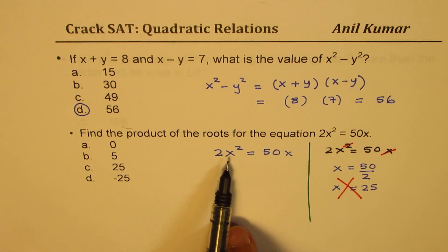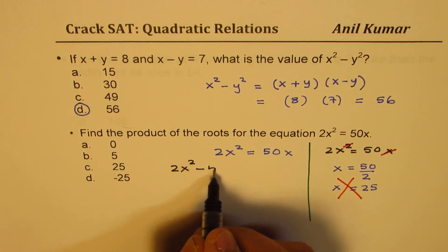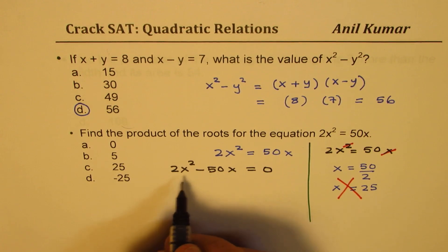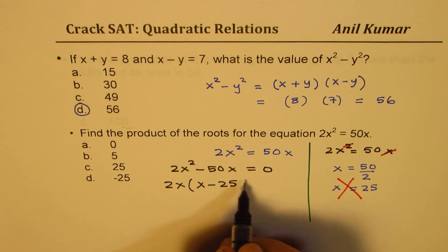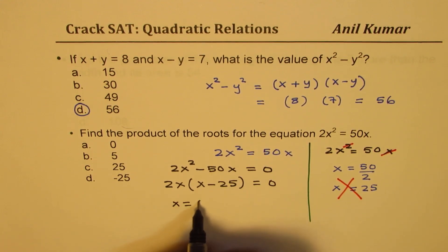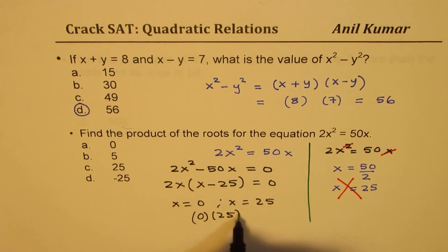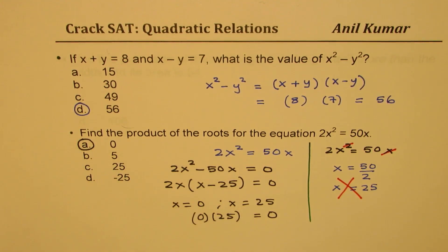So a better solution will be: think like this, 2x squared minus 50x equals 0. When you cancel, you're cancelling one of the answers. So now you take 2x common, so you get x minus 25 equals 0. So x equals 0 and x equals 25. This quadratic equation has two roots. Product means you have to multiply 0 with 25. Anything times 0 is 0, and therefore it is option a. So I hope this concept is clear. This is a tricky question, very simple to answer but you can make a mistake.